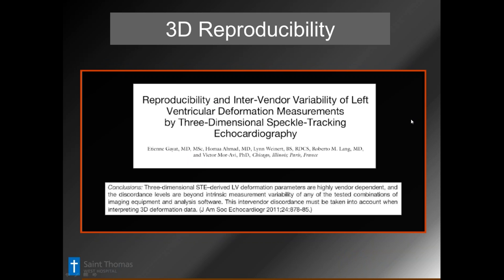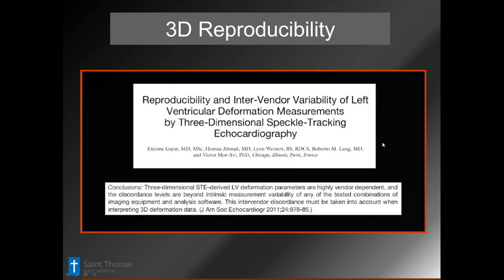There are some questions about 3D reproducibility. A good paper from the Chicago team discussed 3D speckle tracking — the speckle tracking method used mathematically for automatic tracing, which we can then edit. They found some parameters are vendor-dependent and that inter-vendor discordance has to be taken into account. To decrease analysis subjectivity center-to-center and operator-to-operator, we either use an identical cart or vendor-independent software for analysis. We actually have both: one brand of cart with their 3D volumetrics on the cart, and the TomTech LVA on our workstation.